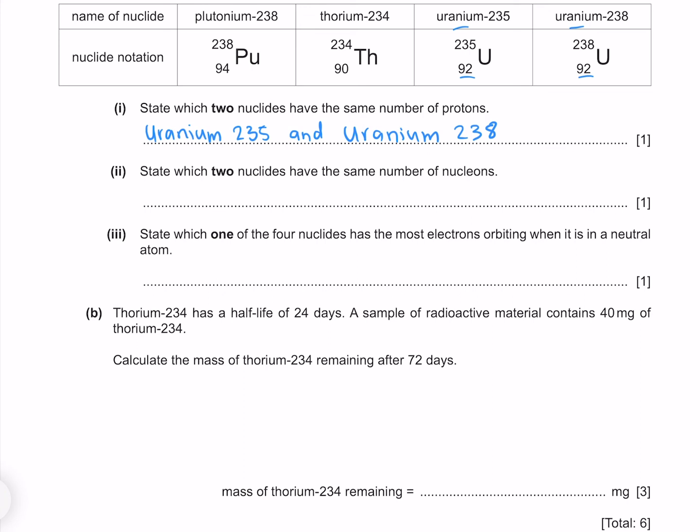State which two nuclides have the same number of nucleons. The amount of nucleons is given by our atomic mass, which is always the larger of the two. And as we can see, of all the options, plutonium-238 and uranium-238 are the same.